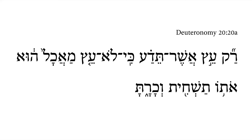Deuteronomy 20, 20a. So we get here 'rach' at the beginning, restricting things — only the tree, which we get here further modifying the tree.